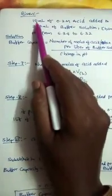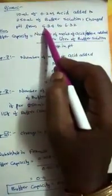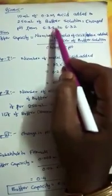In the question we are given with 10 ml of 0.2 molarity acid added to 250 ml of buffer solution. And because of this addition pH of the buffer solution changed from initial value of 6.34 to 6.32.